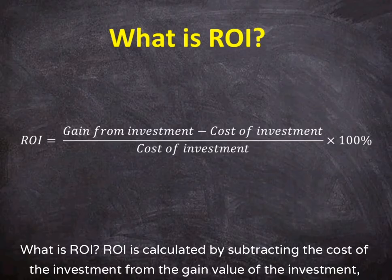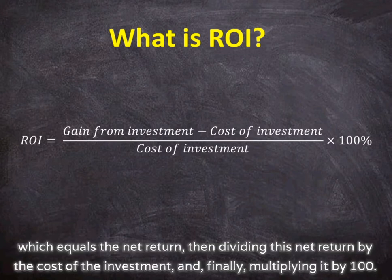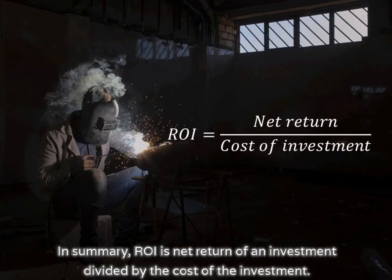ROI is calculated by subtracting the cost of the investment from the gain value of the investment, which equals the net return, then dividing this net return by the cost of the investment, and finally multiplying it by 100.